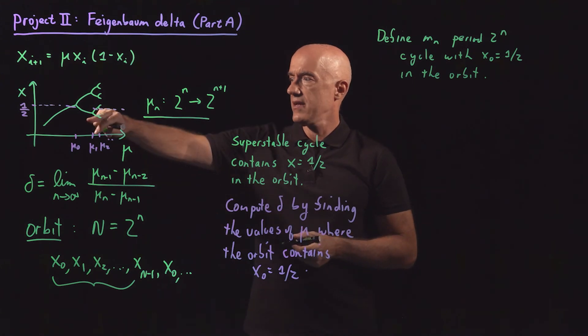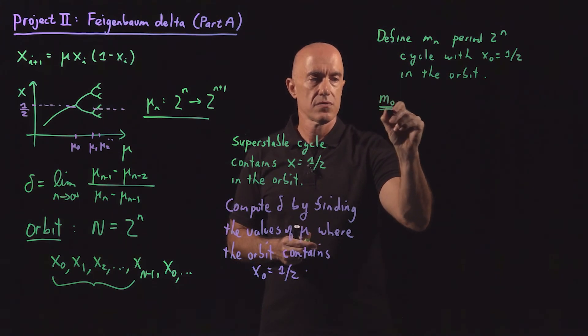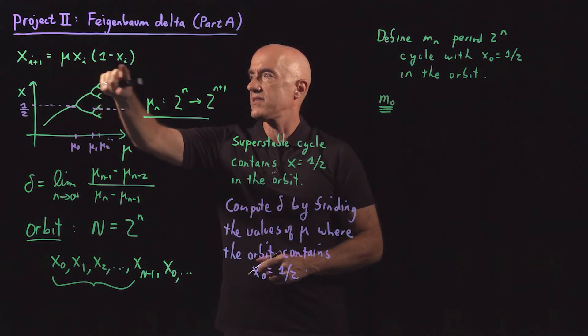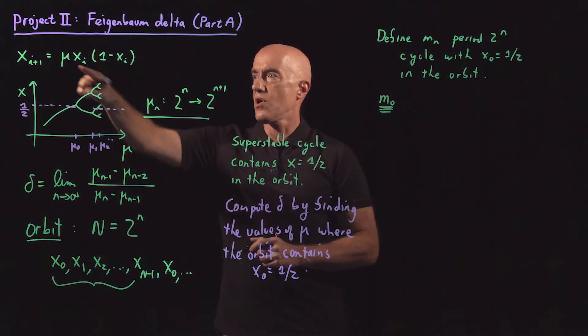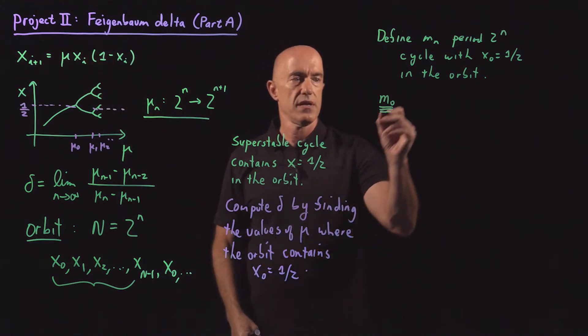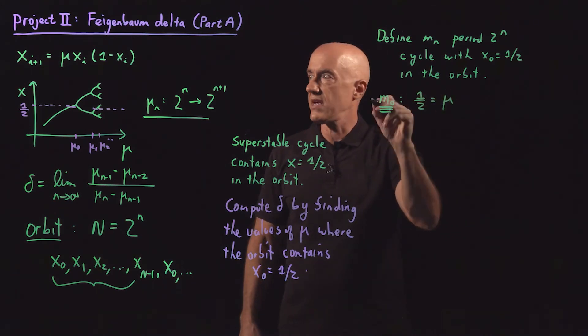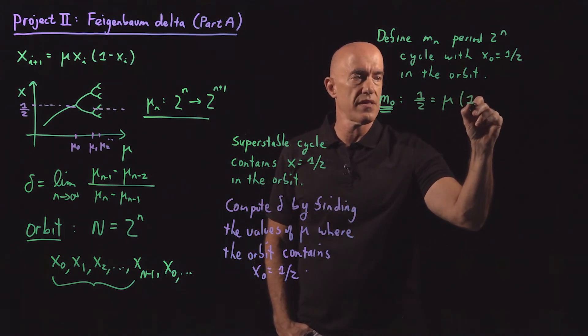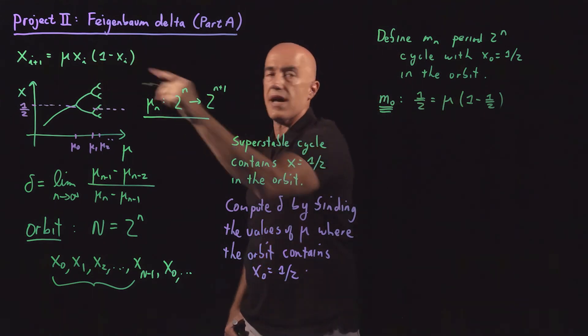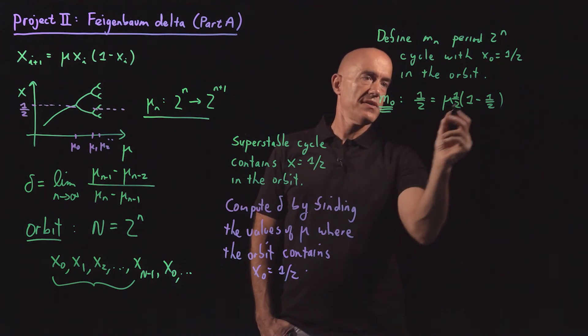We can compute the first value of m. So if we want to compute m zero, m zero means that one half is a fixed point. So if you plug one half in the right hand side here, you get one half. So mu will be m zero when x naught equals one half is a fixed point. So the equation then will be one half equals mu, which will be m zero when we solve this, times one half times (1 minus one half). Or this is mu times x, which is one quarter.